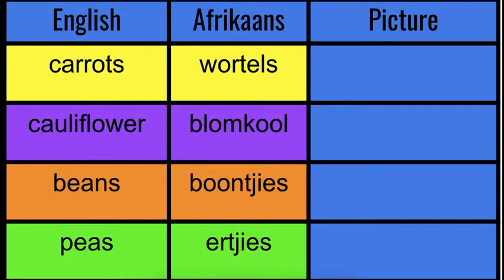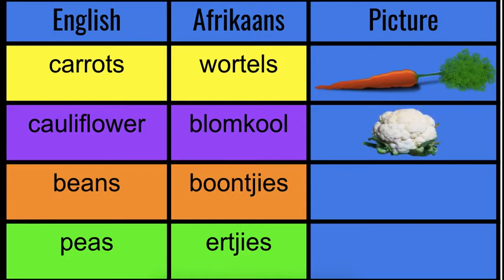Okay, let's do our vegetables — our groente. Try and draw the picture for the word. Wortels — this is a carrot. Blomkool — cauliflower. Boontjies — beans. Ertjies — peas. Okay, let's say them together: wortels, blomkool, boontjies, ertjies. Okay, say them on your own.